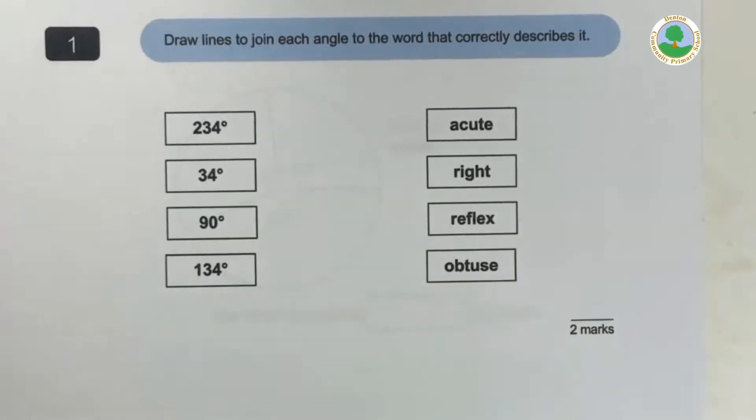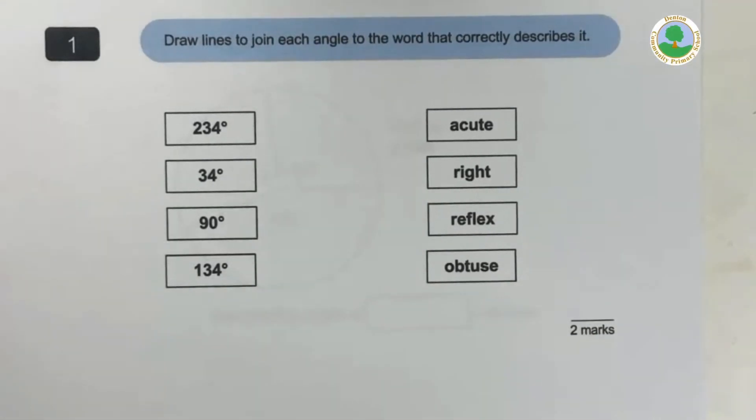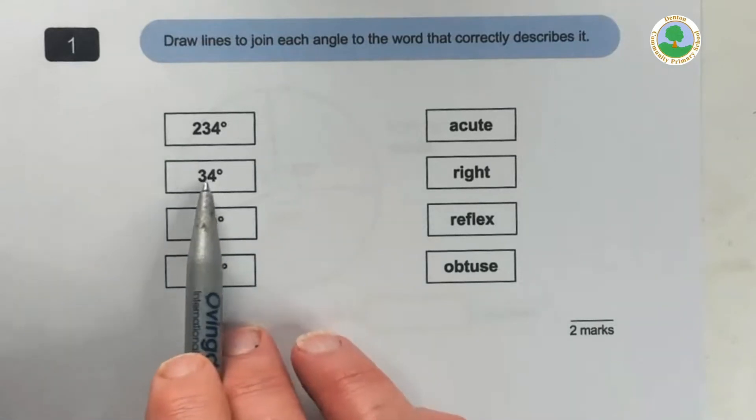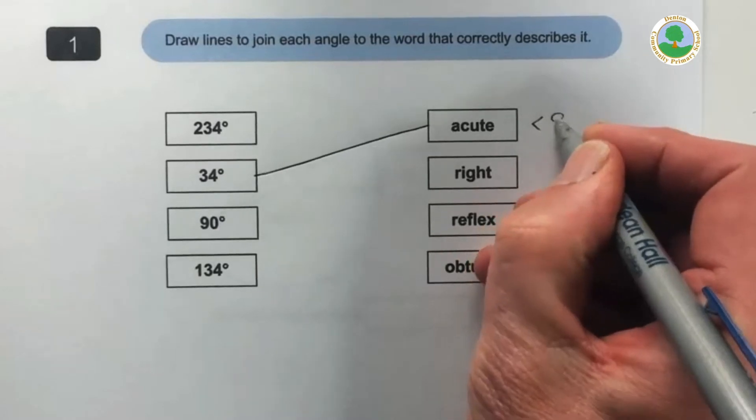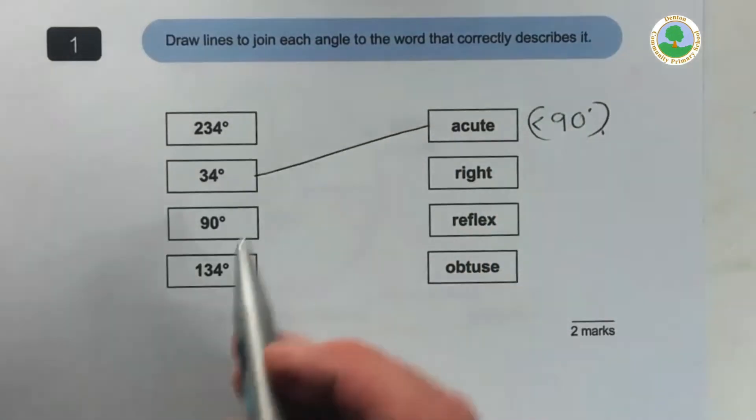I always remember, oh look at that cute little thing, so acute little thing is small for me, so the smallest angle, there we go, 34 degrees, it's less than 90 degrees. That's actually what acute means, less than 90. You don't have to write that, but that is it.